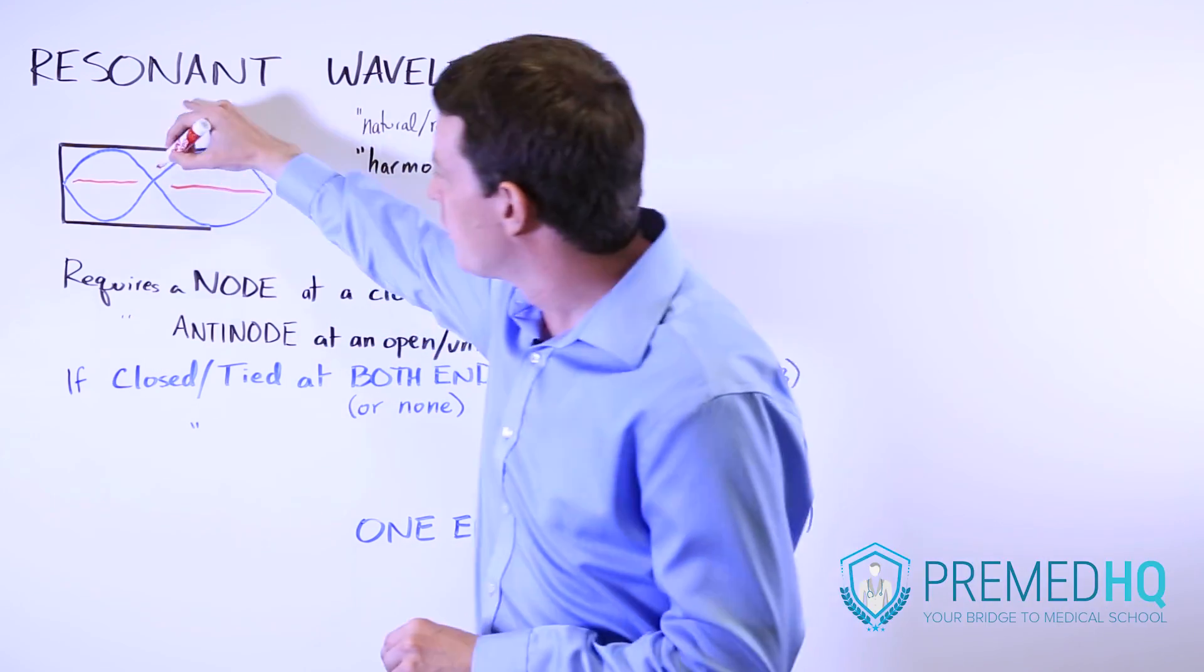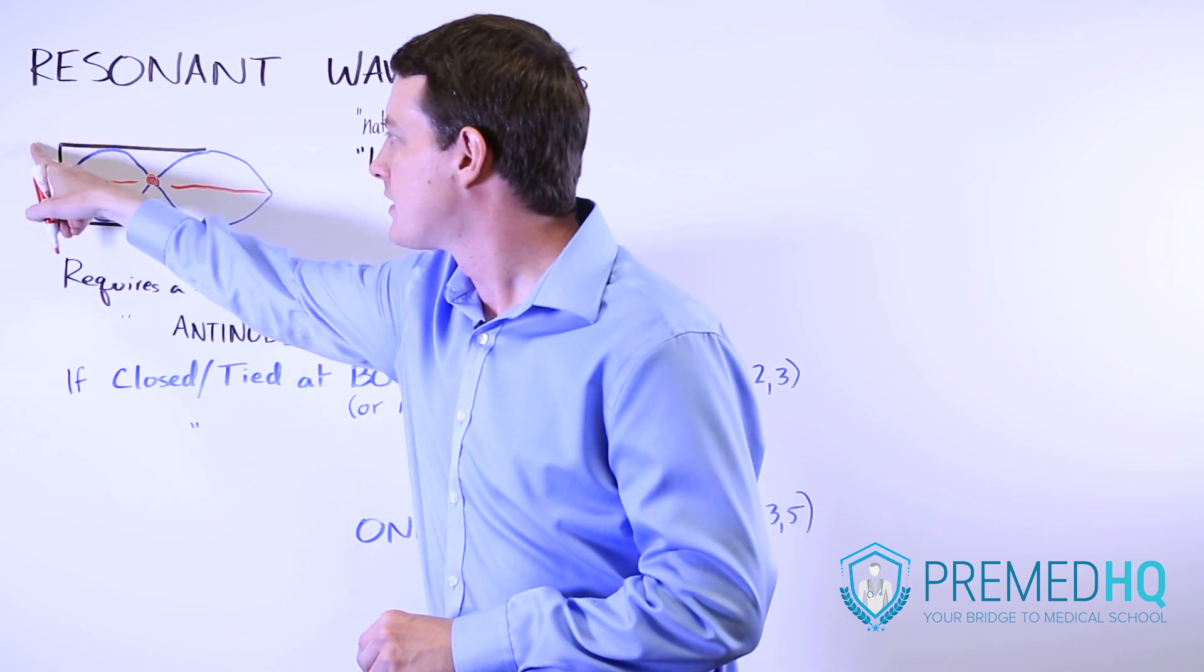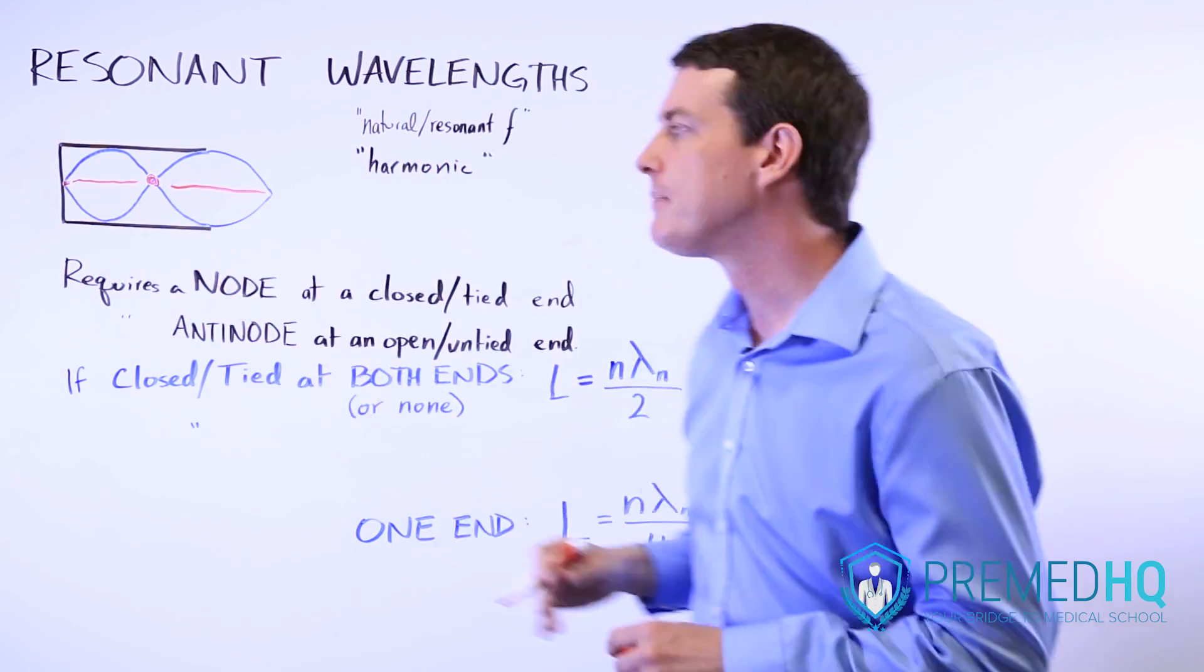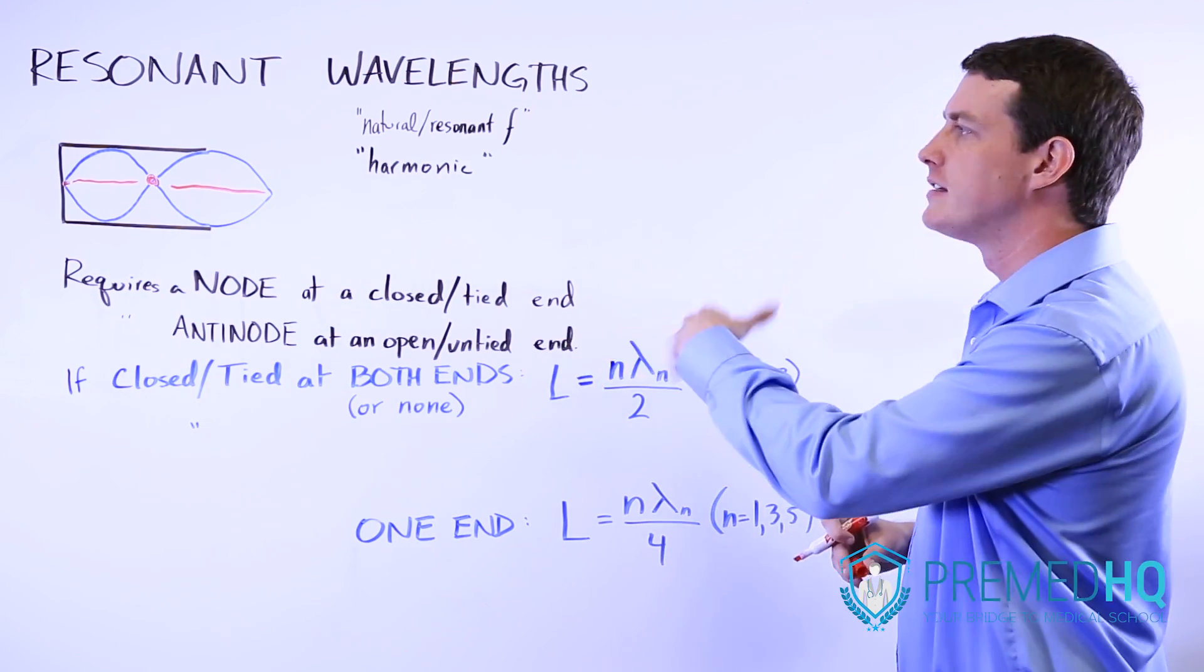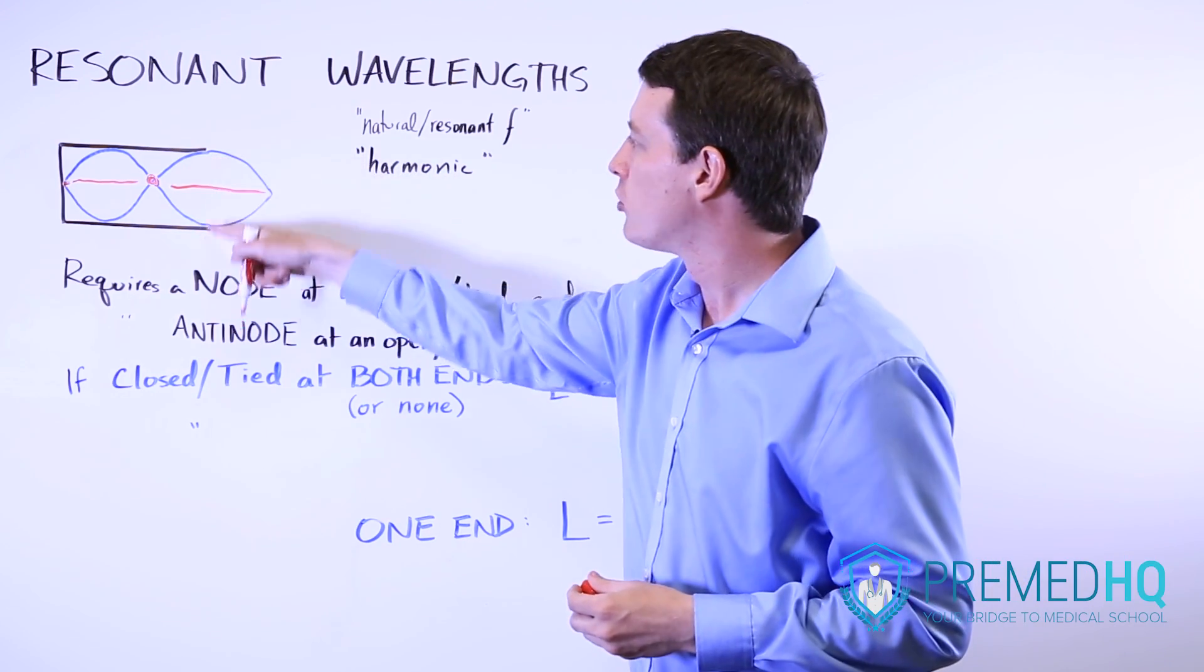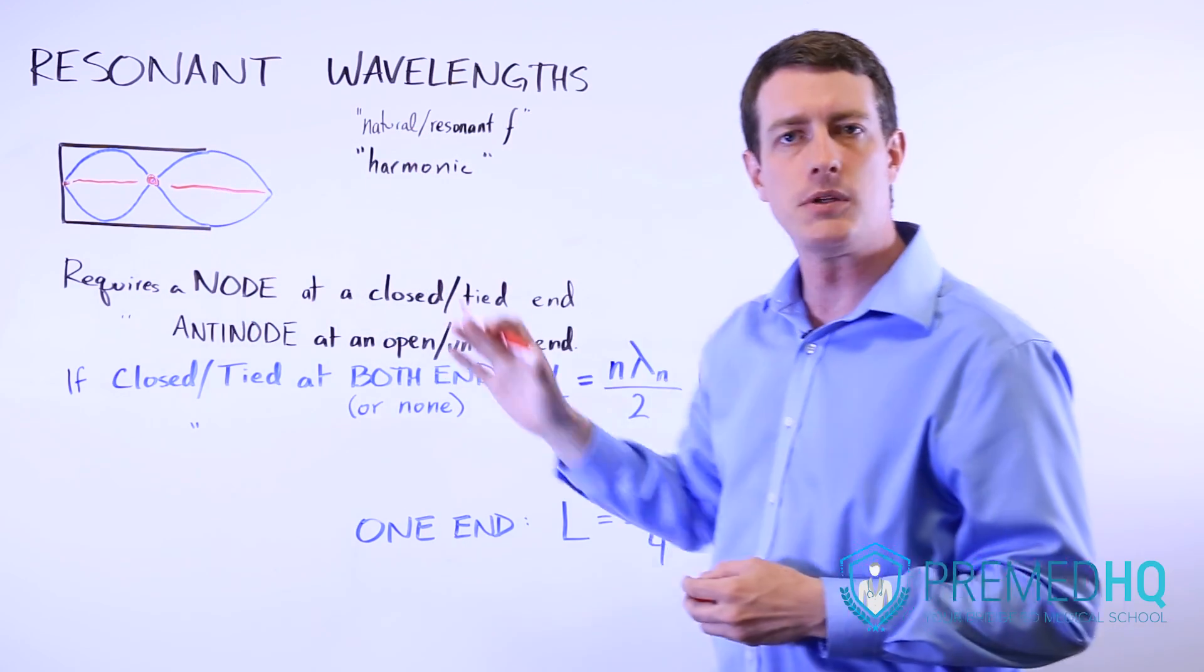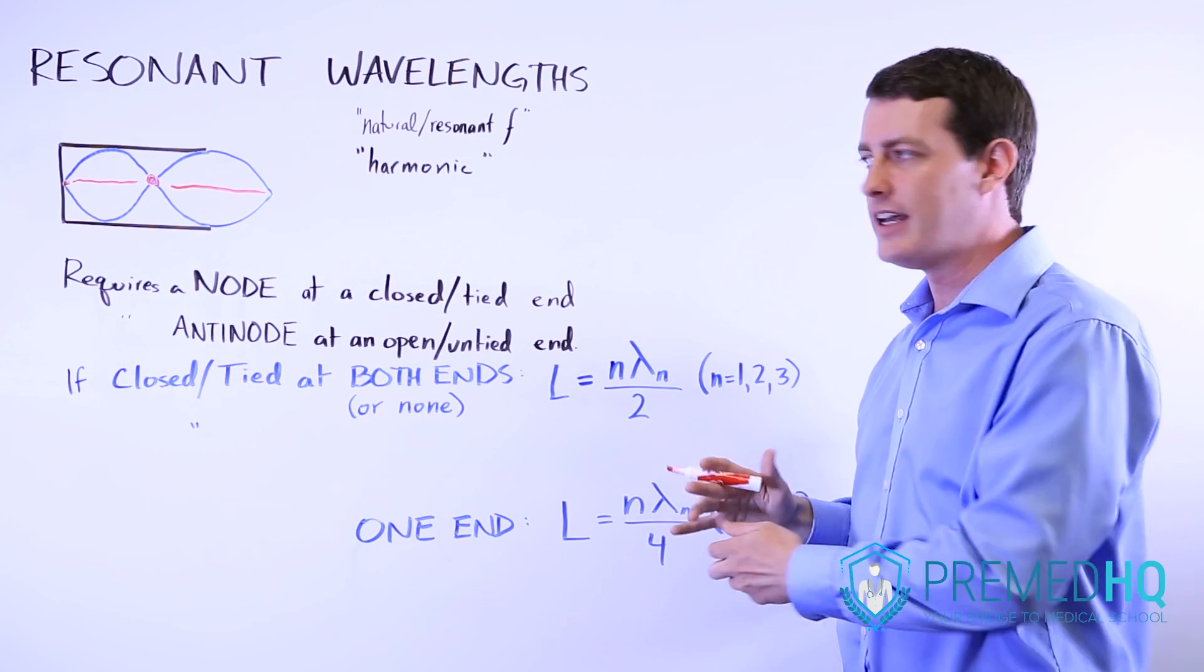A node is whenever the waveforms cross like they do there or over here. Notice this is a closed end of that pipe. The closed end requires a node in order for harmonic or resonant wavelengths to be exhibited. And you need an anti-node, which is where the waveforms are as far apart as possible whenever it is at the open part of the pipe or the untied end of that string.